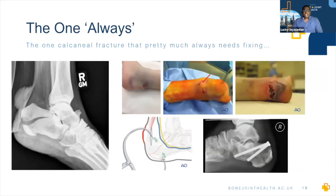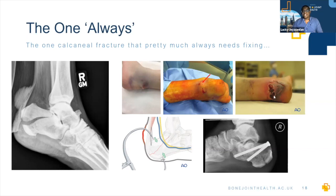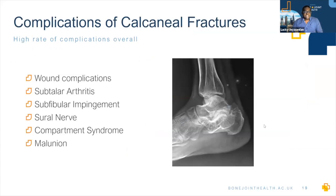There is one type of calcaneal fracture that is not controversial: the tongue-type fracture. The force goes all the way through the tuberosity and the Achilles pulls it up, meaning that fragment of bone presses on the back of the skin. Pressure areas can become skin necrosis in as little as six hours, so for me this is a relative surgical emergency. The technique is relatively straightforward: a small incision in front of the Achilles, a small incision on the base of the foot, a clamp squeezes it together, and large screws engage the plantar cortex. These patients do very well.